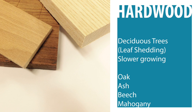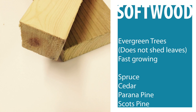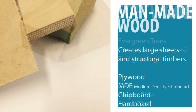Trees that do not lose their leaves in the winter are called coniferous or evergreen, and from these we harvest softwoods. Softwoods such as spruce, cedar, and parana pine tend to be much cheaper and faster growing, and they are used in construction and for exterior timber such as sheds and fences.